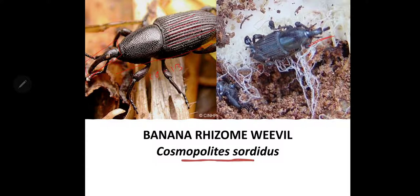The larval or grub period lasts for 14 to 21 days, and pupation takes place in an oval chamber prepared just beneath the surface of the sucker. Pupation lasts for 5 to 6 days. These are important events of the life cycle and nature of damage.